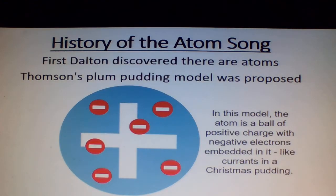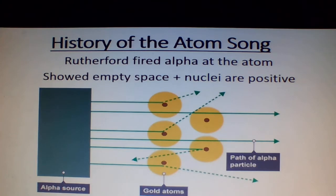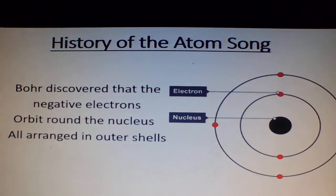Bohr arranged it out as shells. Stolter discovered there are atoms. Dobson's plum pudding model was composed. Rutherford fired alpha at the atom, showed empty space and nuclei are positive. Bohr discovered that the negative electrons orbit round the nucleus, arranged out as shells.